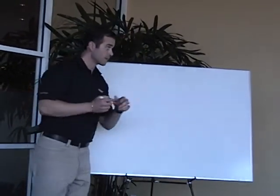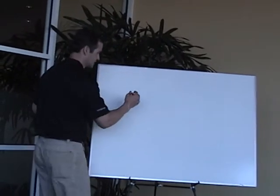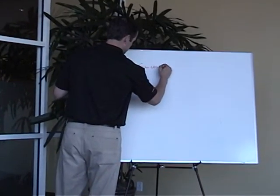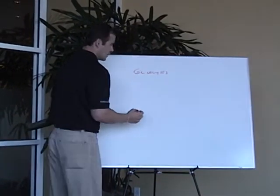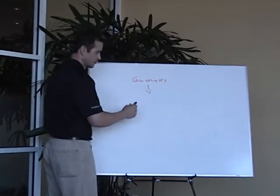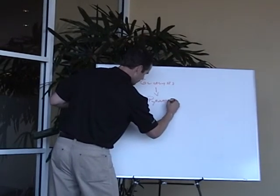Pyruvate, you can see, is the end product of glycolysis. Glycolysis is the breakdown of sugar. As sugar breaks down into a number of different things, it ultimately breaks down into pyruvate.